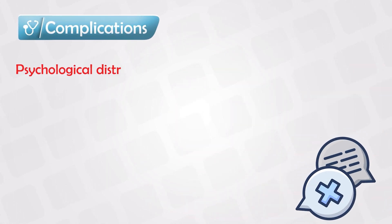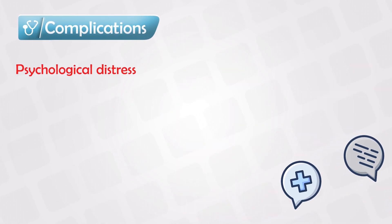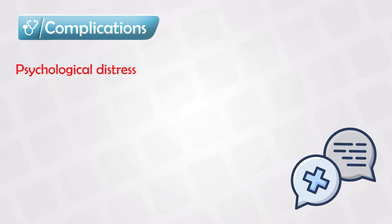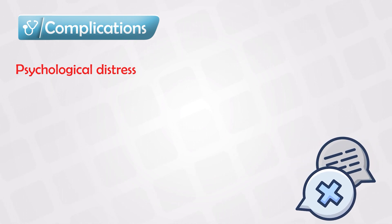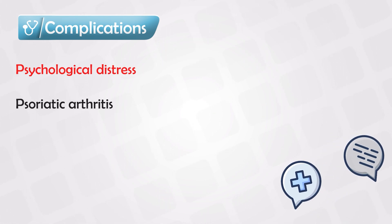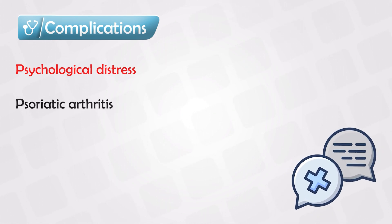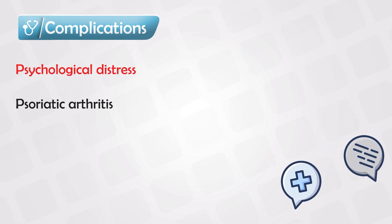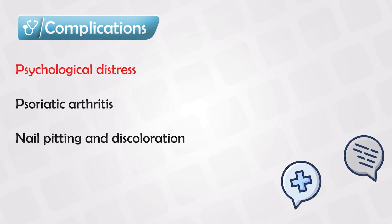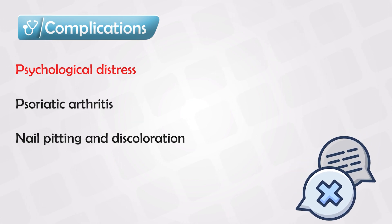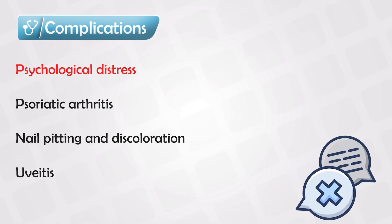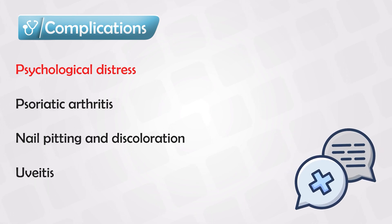The most common complication of psoriasis is psychological disease. However, the condition can also be associated with psoriatic arthritis, nail changes like yellowish discoloration of the nails with pitting and thickening, and inflammatory disorders of the eye like conjunctivitis and uveitis.